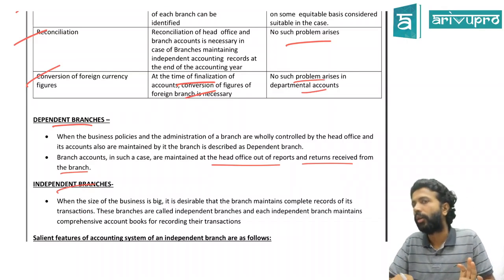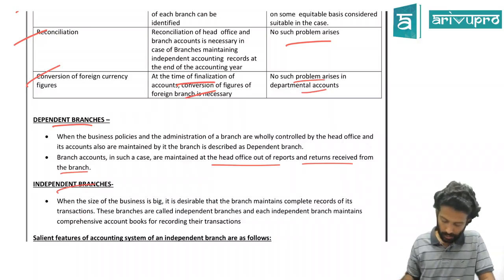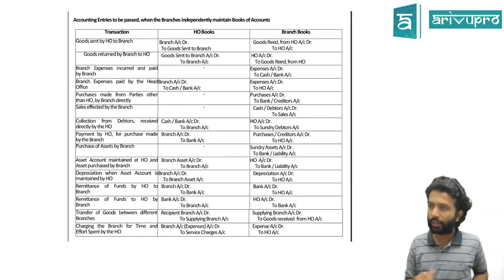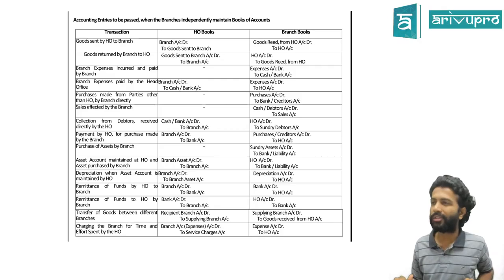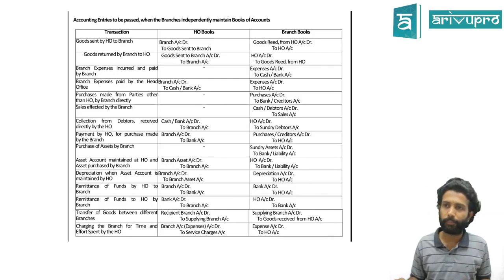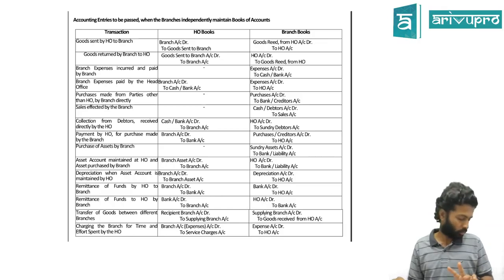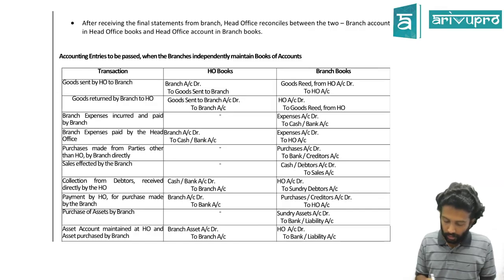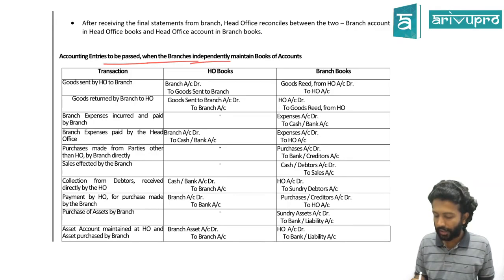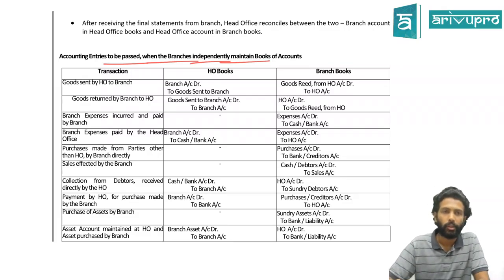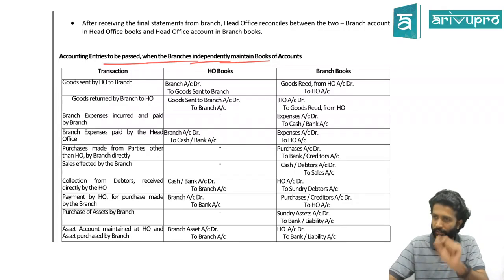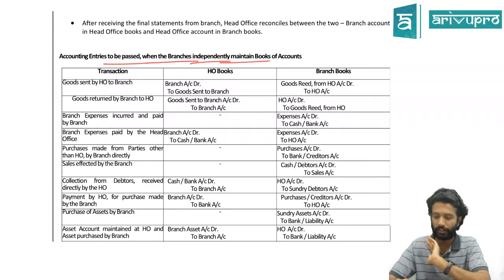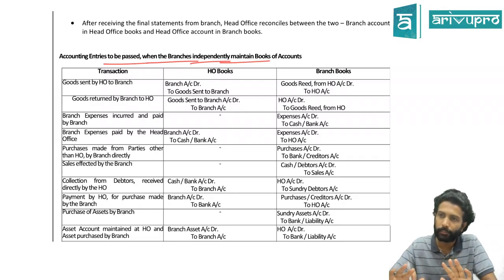We will have three types of problems to cover in branch accounting: dependent local branch, independent local branch, and foreign branch. If you know the journal entry tables, the first three problems are straightforward. This first table covers accounting entries to be passed when a branch independently maintains its books of accounts - what journal entry the branch has to pass and what journal entry the head office needs to pass.